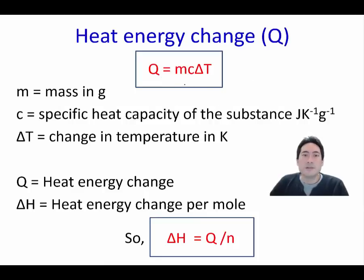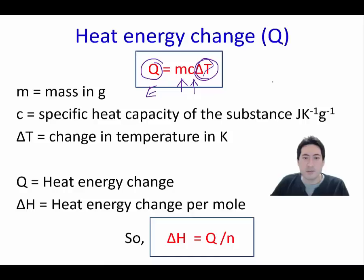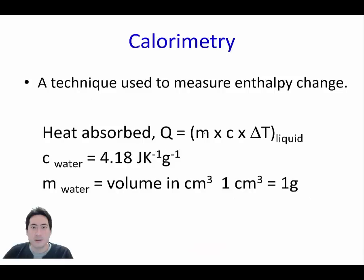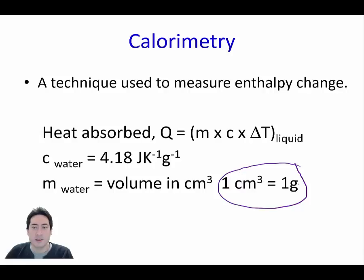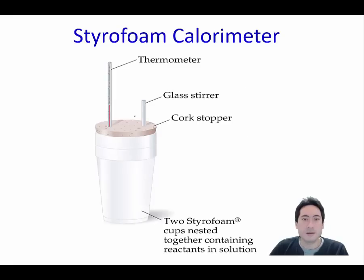Moving on to calculations: we use Q to represent energy, m is mass in grams, c is the specific heat of water, and delta T is the change in temperature. We also need delta H per mole — so divide by n (moles). Remember that for standard enthalpy calculations, 1 cm³ of water has a mass of 1 gram.